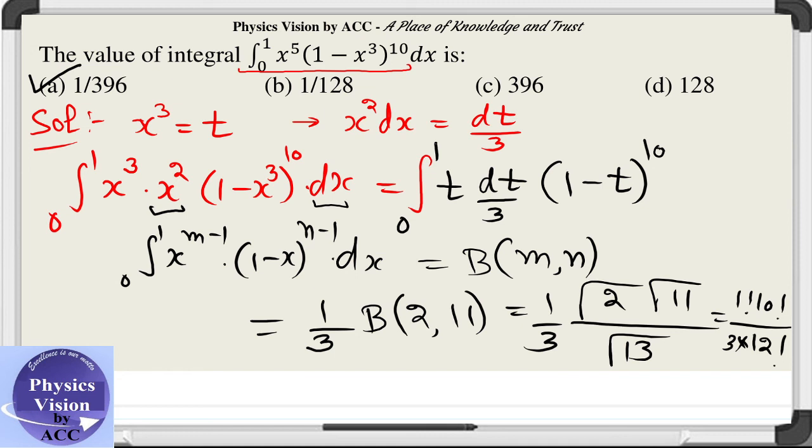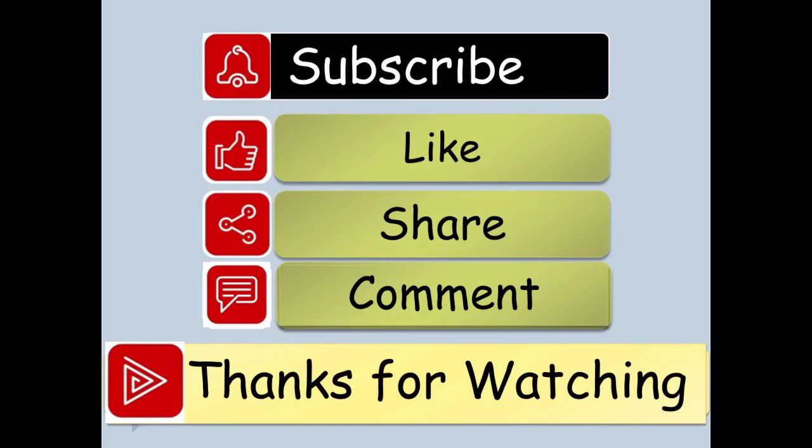Option a, 1 by 396, it is actually 3 into 12 into 12 into 11, which is 1 by 396, is the correct answer. Stay tuned with us for more such videos and doubts, and thanks for watching this.